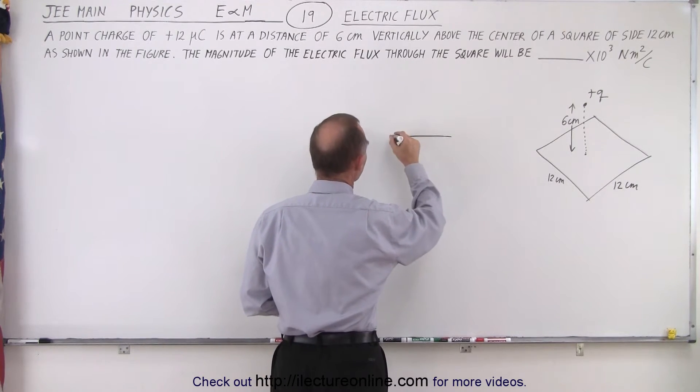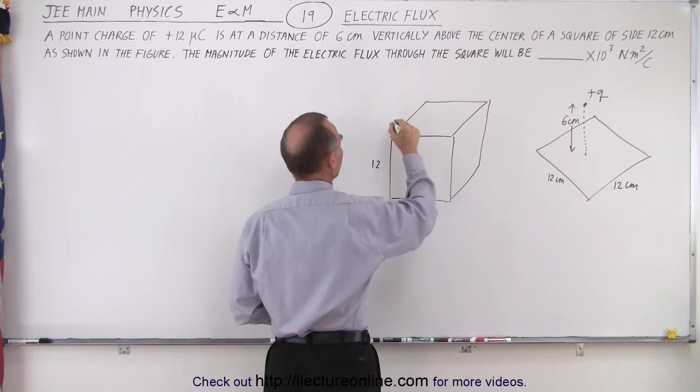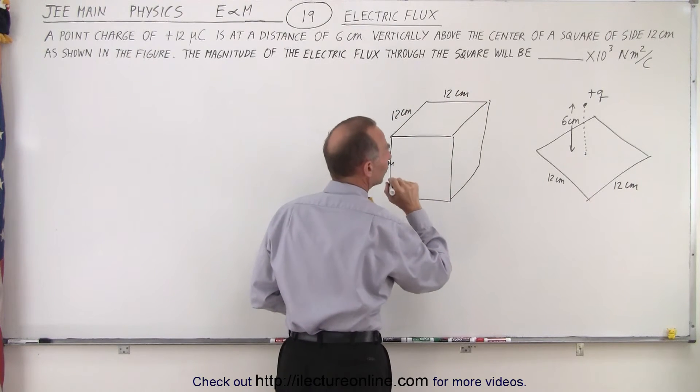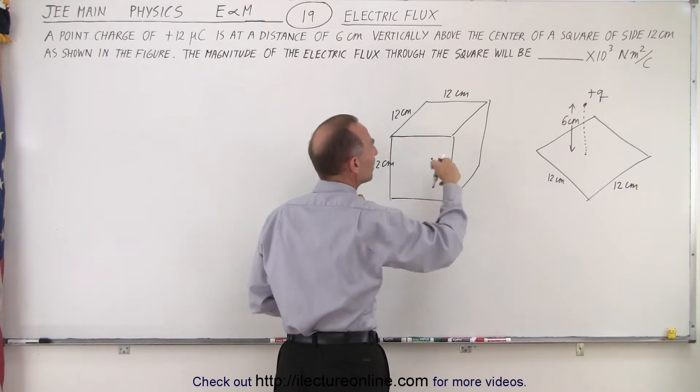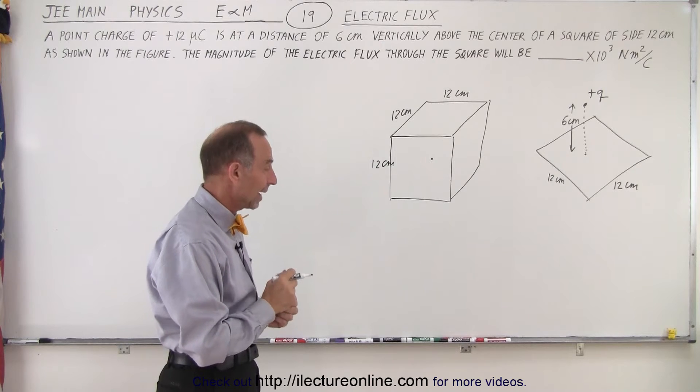We can take a cube like this, where the sides are all 12 centimeters. And then we place the cube directly in the middle of it so that it's 6 centimeters from any one of the 6 sides.